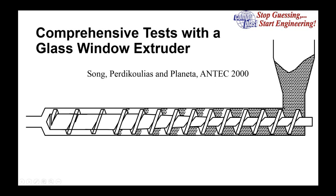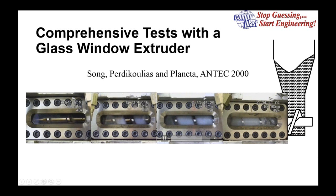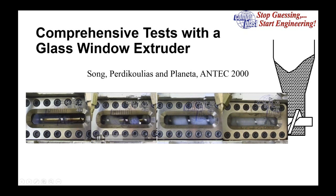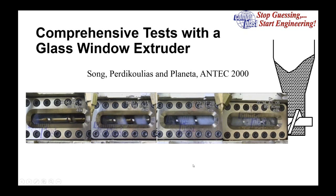To give some background using a glass window extruder from a presentation at Antec 2000: when polymer comes into the extruder, it comes in as solid pellets, which get compressed and then start to melt as they move along the screw, forming two phases — a melt phase and a solid phase. We can verify this using video. The solid pellets come in forming the solid bed, while a melt pool starts on the pushing flight — getting wider as the solid bed gets narrower — until the solid bed completely melts. This would be a normal extrusion process.